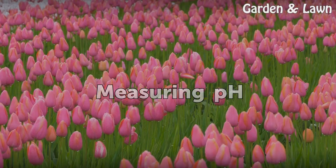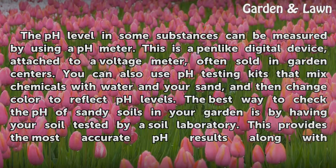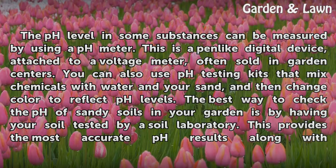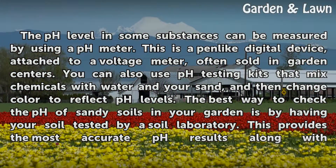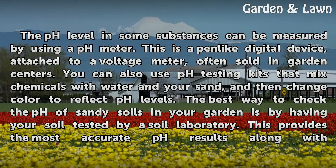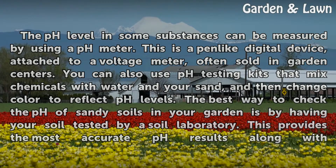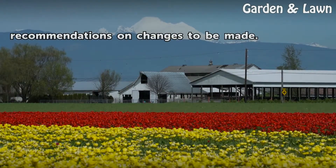Measuring pH. The pH level in some substances can be measured by using a pH meter. This is a pin-like digital device attached to a voltage meter, often sold in garden centers. You can also use pH testing kits that mix chemicals with water in your sand, and then change color to reflect pH levels. The best way to check the pH of sandy soils in your garden is by having your soil tested by a soil laboratory. This provides the most accurate pH results along with recommendations on changes to be made.